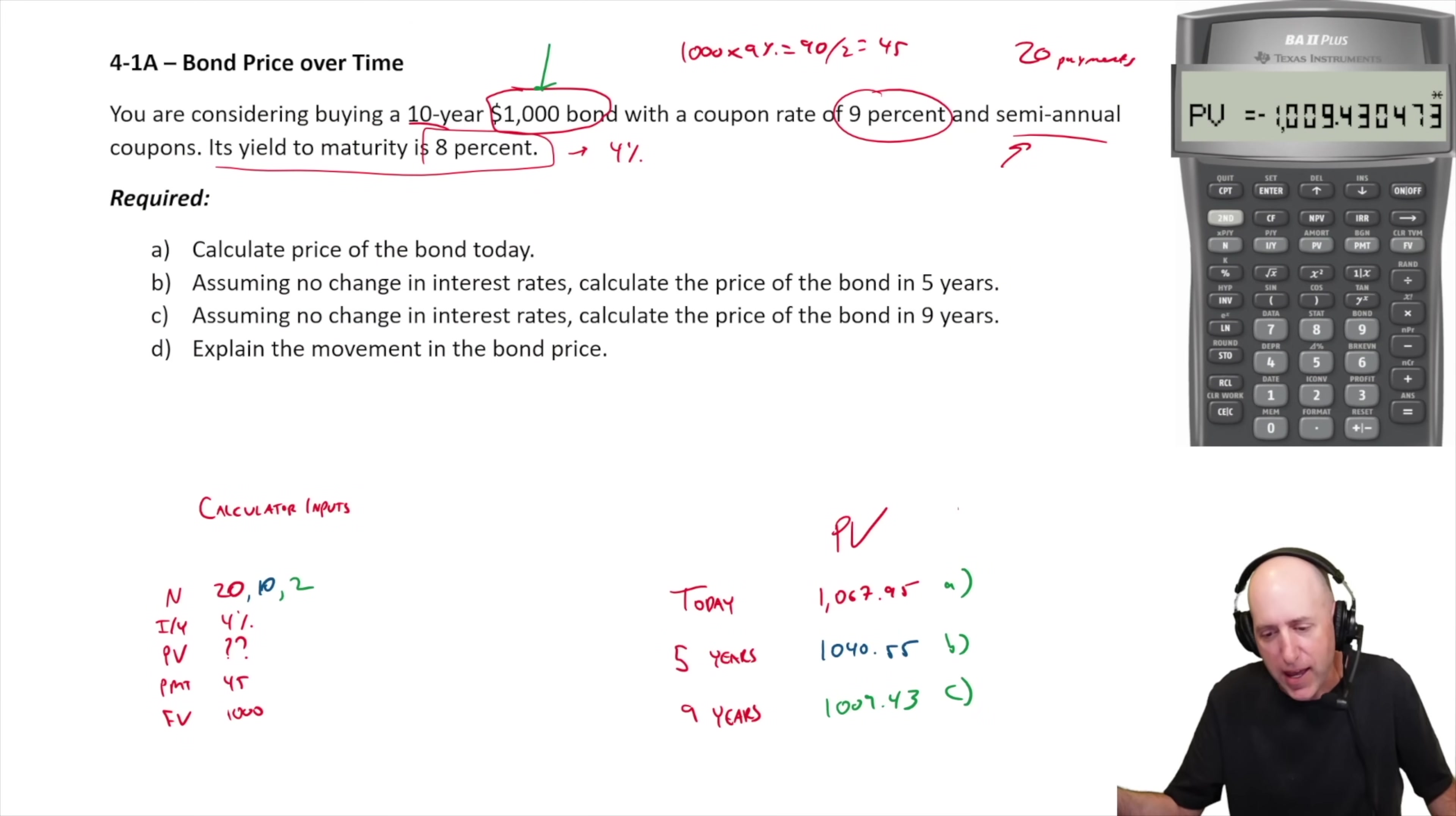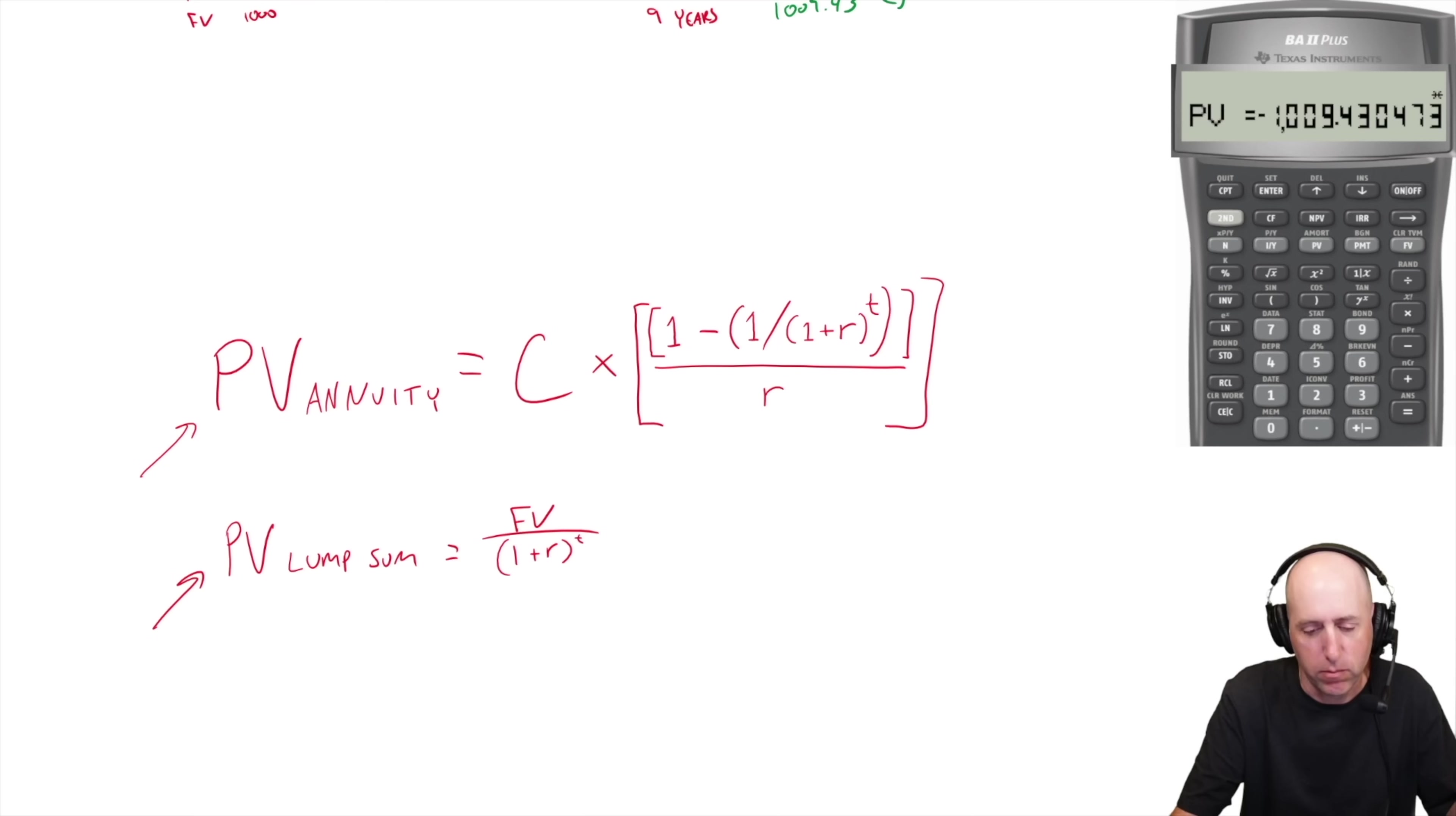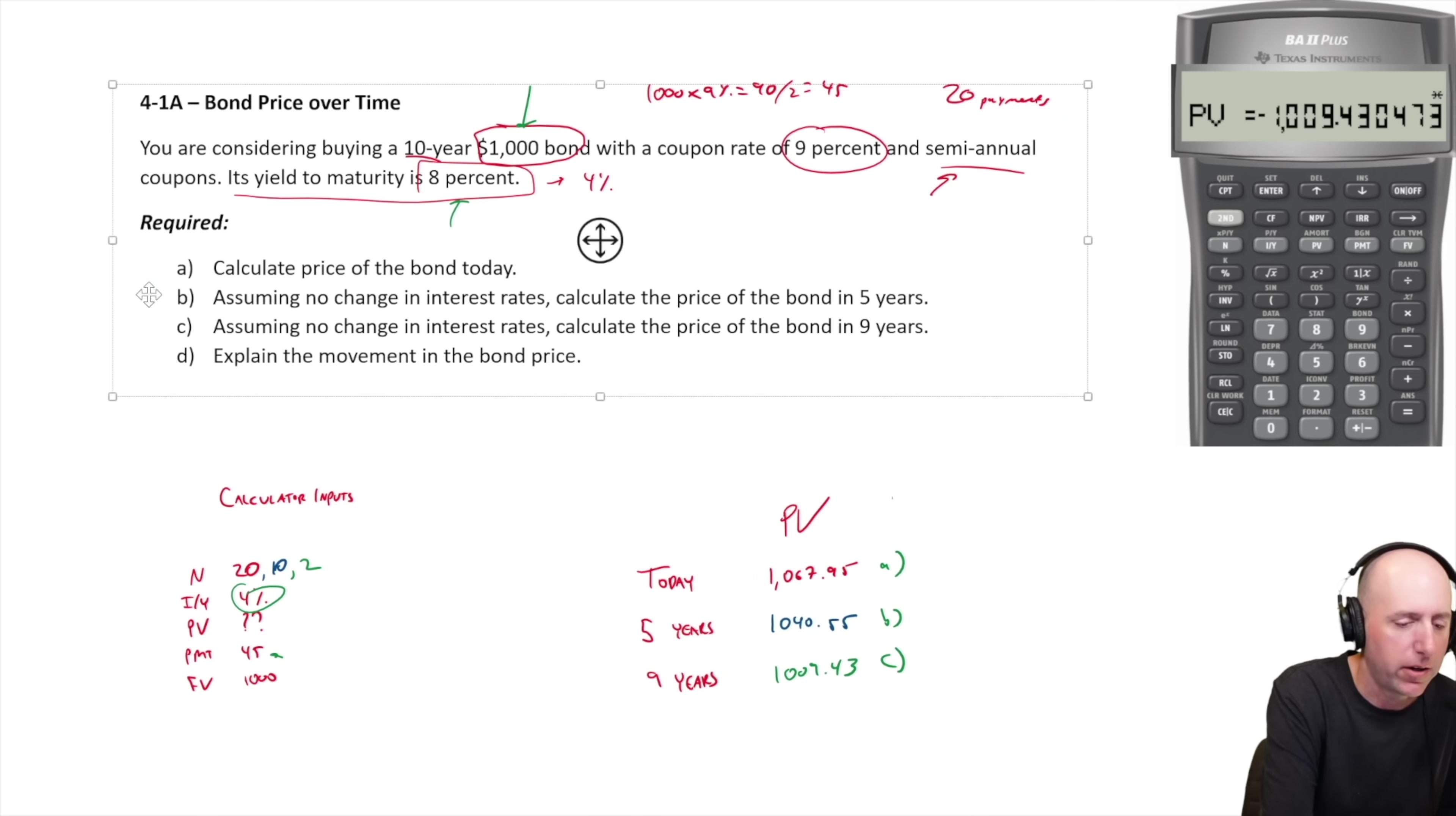Let's do this by hand though, and see how you're coping with doing it by hand. The present value of the annuity is the payment amount. We said the payment was 45 bucks. So C is cashflow, the regular cashflow, 45 times 1 minus 1 over 1 plus the interest rate, this is the I/Y, the yield to maturity divided by two. So 4%, 1.04 to the power of T, it's 20. I'm redoing part A, just to be clear. I'm calculating the bond price.